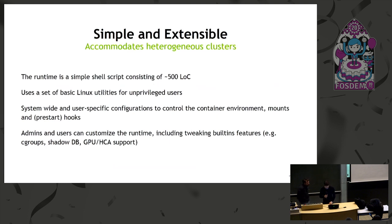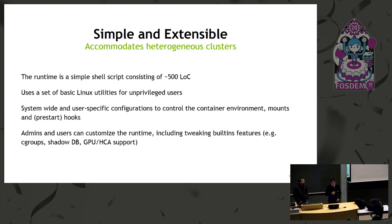Finally, we wanted enroot to be super simple. The runtime is just a 500-line shell script using basic Linux utilities to set up everything. This makes it easy for users and admins to customize. If there's something you don't like in the runtime, you can change it. We have user and system-wide configuration files — you can drop these in to automatically mount home or set environment variables in all containers on the system, or for specific users.